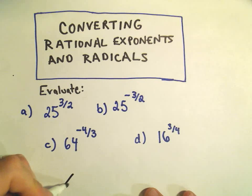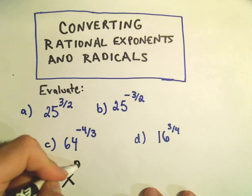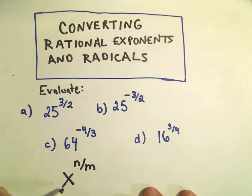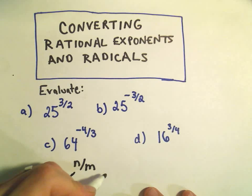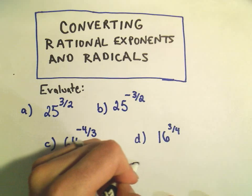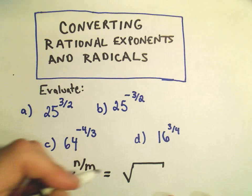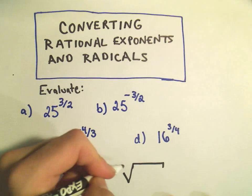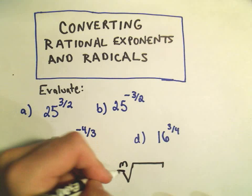The main rule that we're going to use here says that if you have x raised to the n divided by m, we can write that as a radical or a root. The number on the bottom goes out front, that becomes our root.